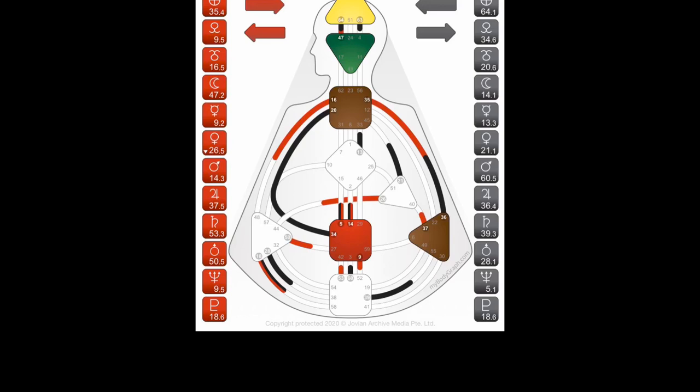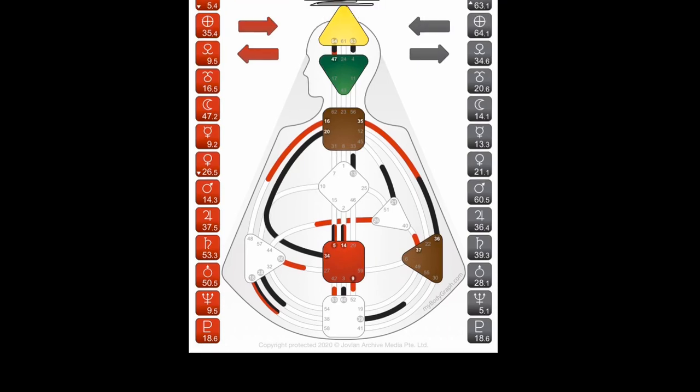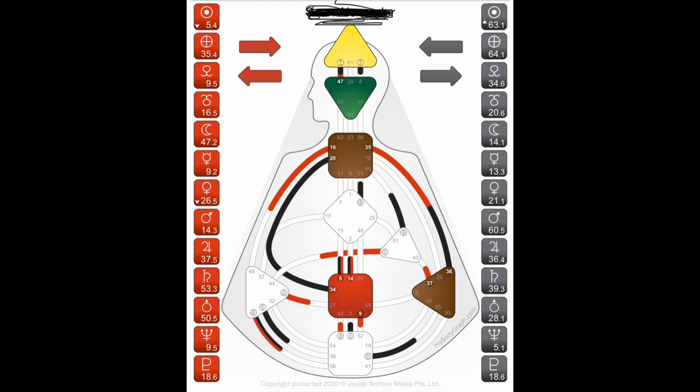The shapes you see on the chart — it doesn't matter what color they are. What matters is whether they're colored or white. If they are colored, those are the energy centers that are defined. The ones that are white are energy centers that are undefined or open. Starting from the bottom, the bottom square, which is undefined on this person's chart, is the root center. The next one up, which is defined in red, is the sacral center. To the left, which is undefined, is the spleen center.